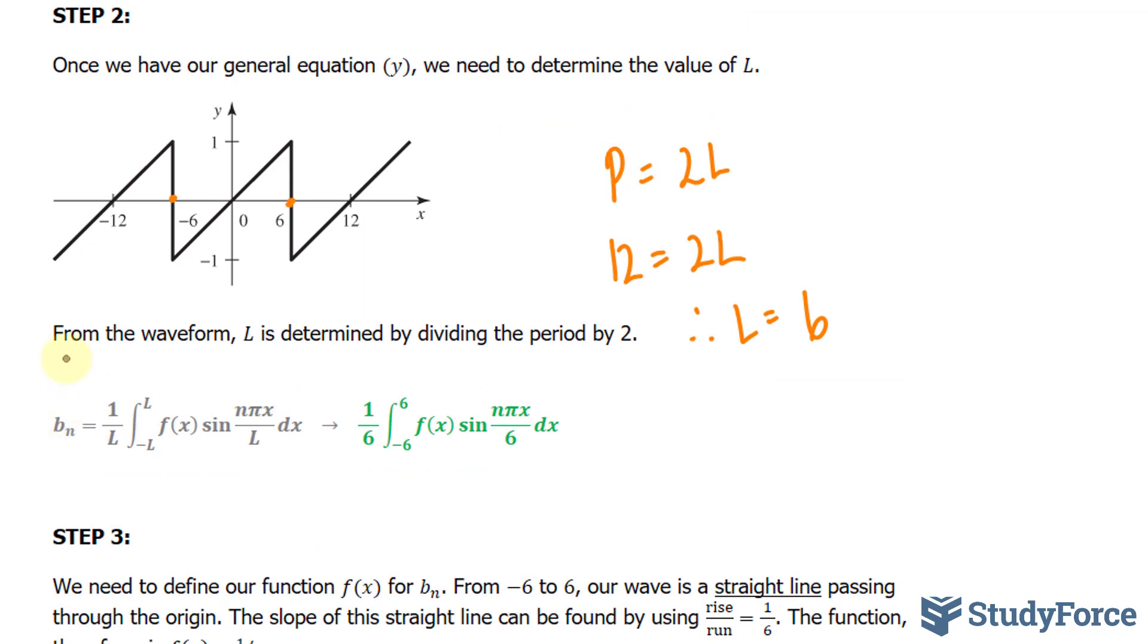Where b sub n, the general formula, the L gets replaced with 6. The lower and upper bounds are negative 6 and 6. And this number is also a 6.